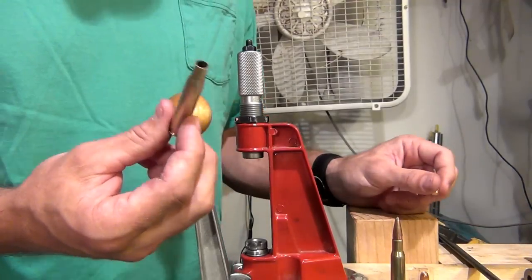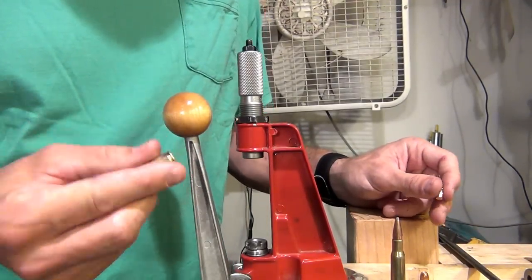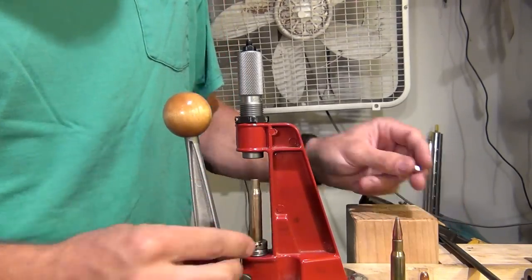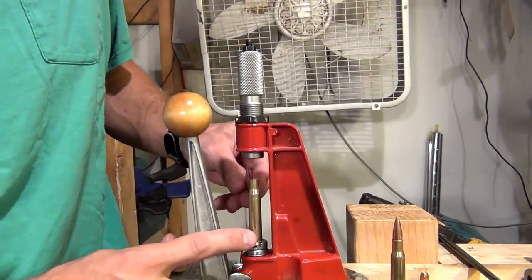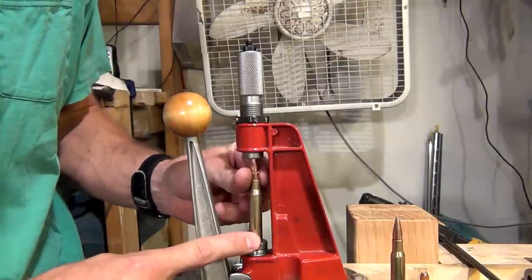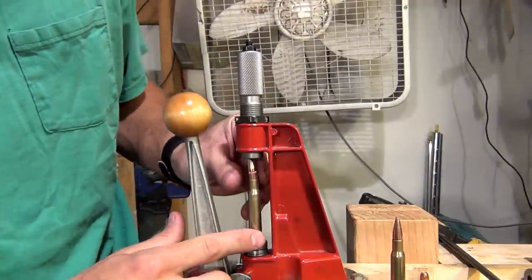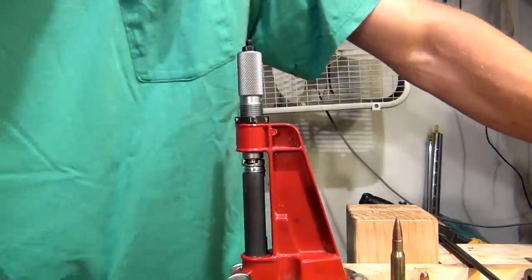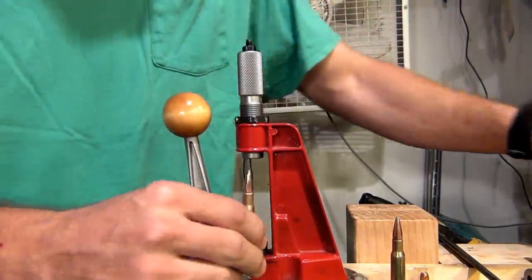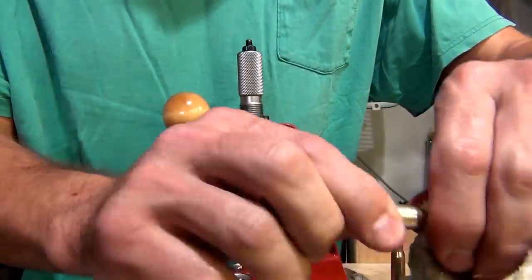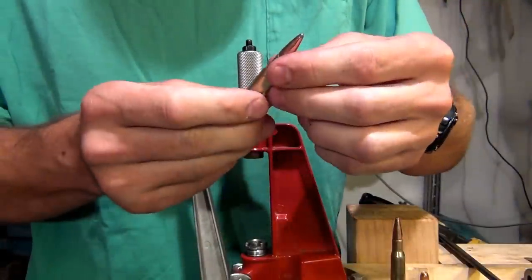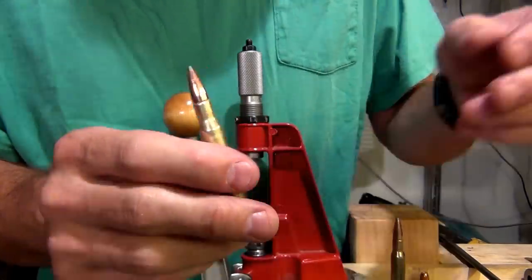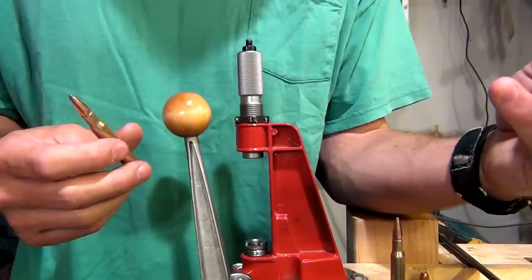So let's pretend that this is another charged case full of powder. Of course I just dumped it out, right? Let's pretend that's a loaded case. Got a primer, everything. We're going to take our bullet and now with one stroke of the handle, we will seat the bullet and crimp the bullet. One. Get my little rag here and clean it up. That looks beautiful. So that shows you how to establish your crimp.